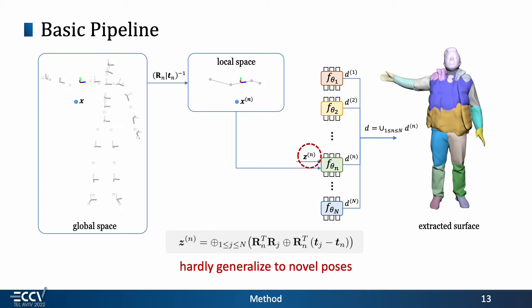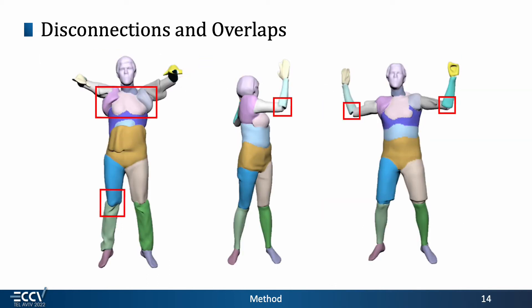Once we are able to obtain preferable body partition, we consider non-rigid deformations. Although we fit in the status of joints to ease fitting, similar to NASA, the model still hardly generalizes to novel poses, producing disconnections and overlaps in novel poses.